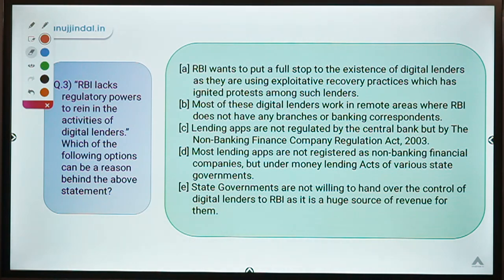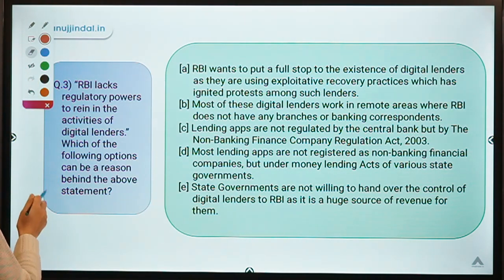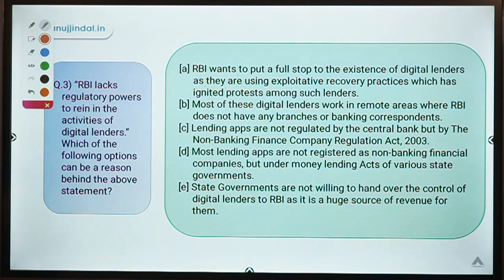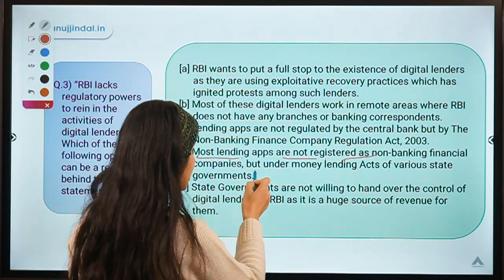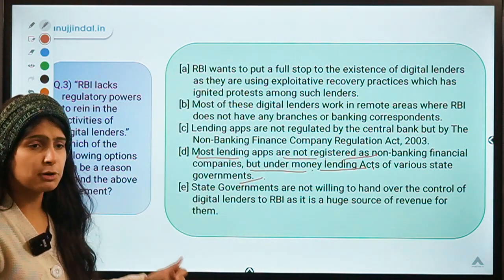Coming to the next question: it says RBI lacks regulatory powers to rein in the activities of digital lenders. Which of the following options can be a reason behind that statement? Five reasons are given and you have to select the correct option. Moving ahead, the correct option is option D, which means most of these lending apps are not registered as NBFCs but under money lending acts of various state governments.